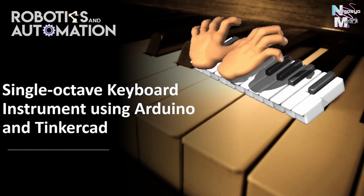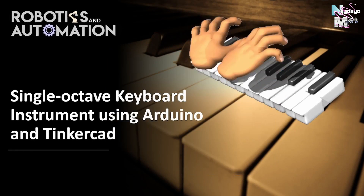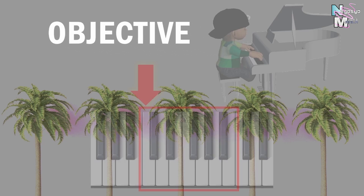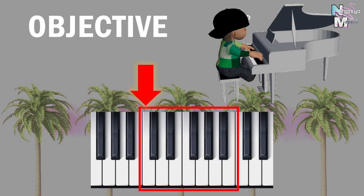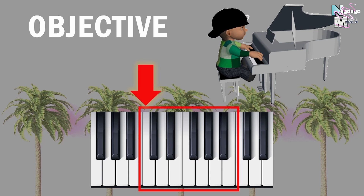Hi, today I'll show you how to use Arduino to make a single octave keyboard instrument. The main objective of this video is to create or at least replicate one octave, exclusive to seven natural keys of an actual piano or musical keyboard instrument, starting at the middle C. But first, let us briefly introduce ourselves to the world of music.